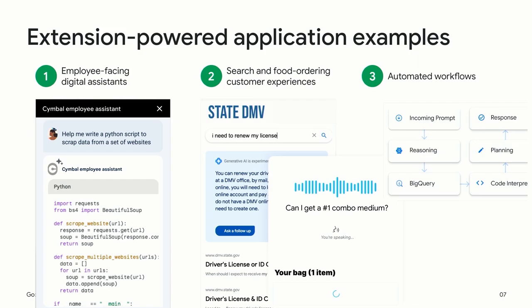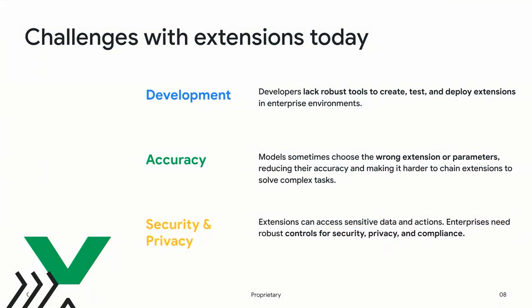We see a world where LLMs and APIs are combined to build sophisticated extension-powered applications — including digital assistants that can create entire documents, spreadsheets, and programs; search engines that can provide highly personalized responses grounded in an enterprise's context; and automated workflows that can streamline tasks in areas like data science and cybersecurity. Despite the promise of extensions, they have challenges today. Developers lack effective tools to create, test, and deploy extensions. Model output from extensions is often not accurate enough — models too often choose the wrong extension or wrong output format. And extensions can access sensitive data and actions, creating new risks around security, privacy, and compliance.